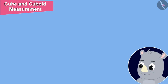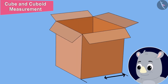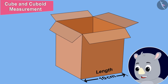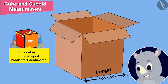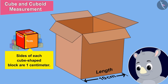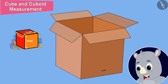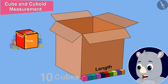Gagoo then measured the length of the edge of one of those cube-shaped boxes. The length of this cube-shaped box is 10 cm, and the sides of each cube-shaped block are 1 cm. That means the length of this box is equal to 10 cubes.